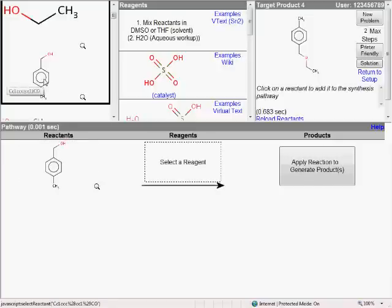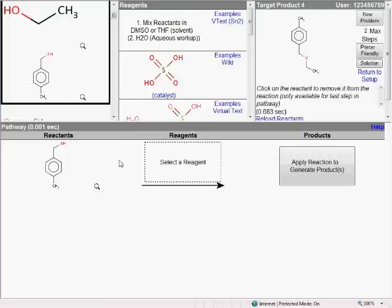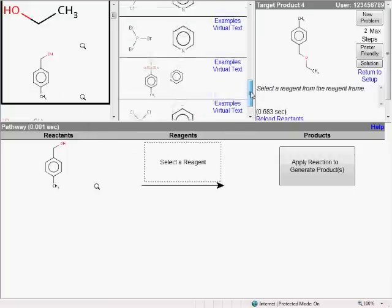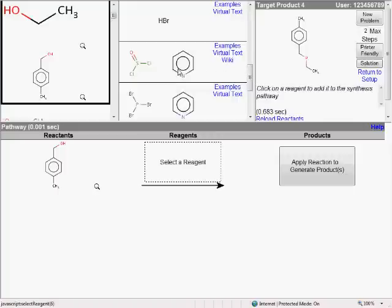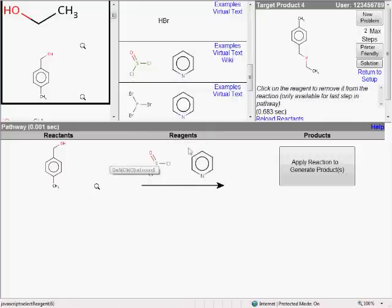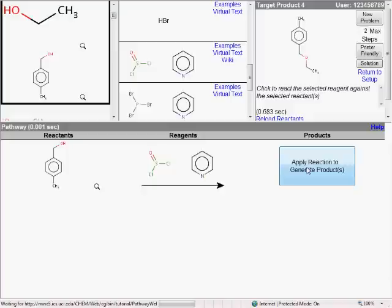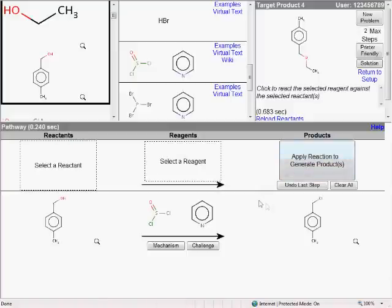To do that, just click on a reactant you want to work with to copy it to the pathway workspace area below. Then click on a reagent you want to work with, such as this thionyl chloride and pyridine, to copy it to the workspace. Now that we have both a reactant and a reagent selected, click on the big Apply Reaction to Generate Products button, and the system will actually predict the major product of that reaction, which is this alkyl halide.